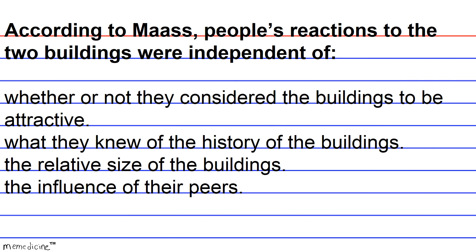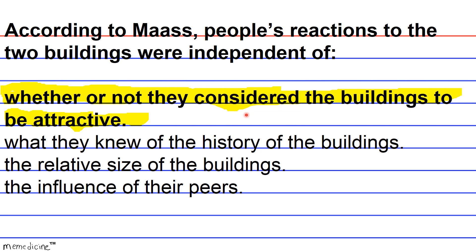This is a foundations of comprehension question that wants you to recall specific parts of the passage. In the second sentence of the third paragraph, Mass writes: 'From the standpoint of general aesthetic distinctions such as beauty versus ugliness, no differences emerged between the two buildings — if anything, the new building was seen as slightly more attractive.' The data suggests participants responded more to the intimidating nature of the building than to its beauty. So the reaction was not based upon their assessment of beauty — it was independent of this variable. The correct answer is A.